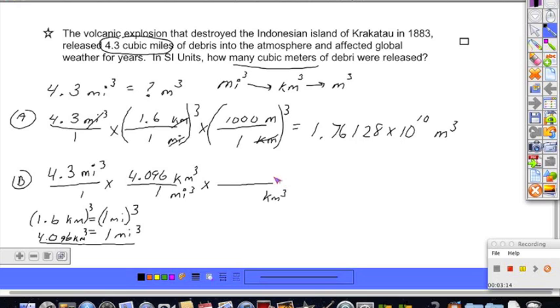And then we want to convert to meters cubed. Again, we can look at their length relationships. And we know that 1,000 meters is equal to 1 kilometer. If you cube both sides, 1 times 1 times 1 gives you 1 kilometers cubed. 1,000 times 1,000 times 1,000 gives us a billion, and then we have meters cubed for that unit as well.